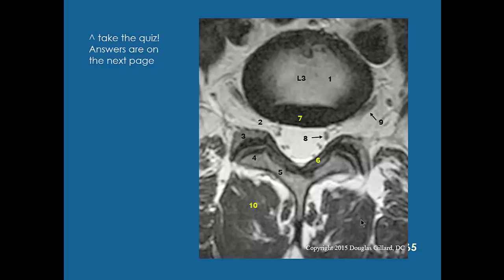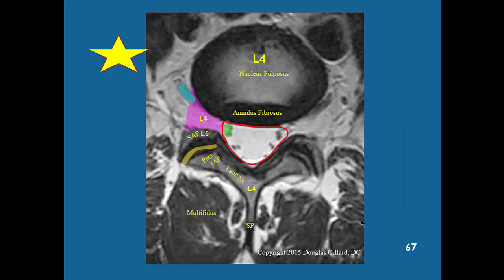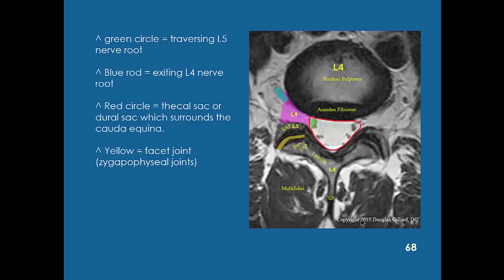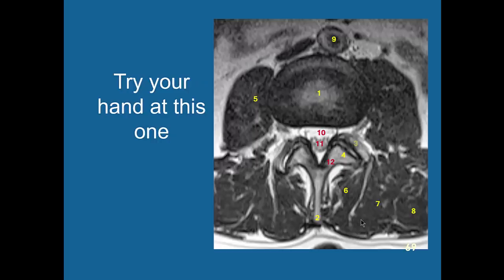First quarter students: don't worry too much about this. Eighth quarter students: you need to know all these structures cold or you'll be in trouble. There's also a case of facet tropism here — one facet is sagittal, the other coronal. You can tell which facet joint is the pain source by doing a facet block: injecting an anesthetic inside the joint. If this is the cause of pain and you inject anesthetic, it should knock out the pain. If it doesn't, it's not the cause.